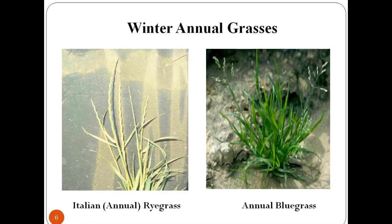Winter annuals germinate from seed in the late summer or early fall. Young winter annual plants live through the winter, then flower, seeds are set, and they die the following summer.